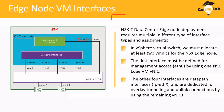A single virtual machine can have multiple VNICs — maximum 10 VNICs can be assigned to a single VM in vSphere networking. But in this Edge Node, when you deploy it, VMware is actually configuring this VM with 5 different VNICs.